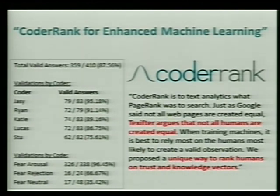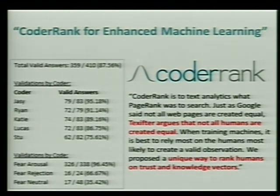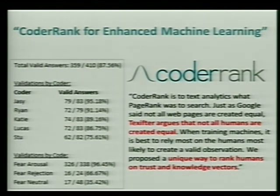We label data and then do a second level of annotation to adjudicate differences between coders. The things we learned through this process were the basis of a patent awarded last year — the colloquialism is 'coder rank.' Essentially, not all coders are created equal: some are very good, some are poor, and most are average. If you want to do machine learning, it's better to weight the observations of annotators who are more likely to make a valid observation. It's analogous to the way Google looks at the web and says not all web pages are equal — we're saying not all humans are equal when we go to train machines. Through iteration and discovering who's getting it right and how hard the problem is, we learn more about not just the individual human over time, but also about the problem of labeling data.